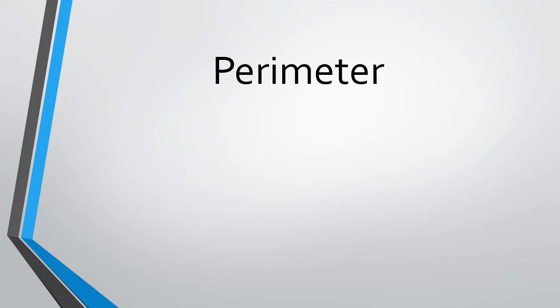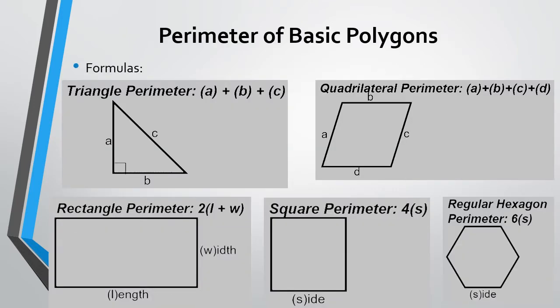What is perimeter? From your lesson, you learned that perimeter is basically the length around the outside of the object. We have formulas to calculate it. For example, for a triangle, we can add A plus B plus C, and we get A plus B plus C equals the perimeter. Or you can just think of it as adding all the sides.